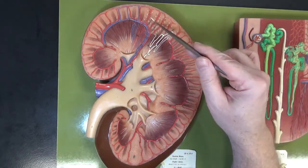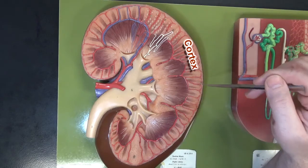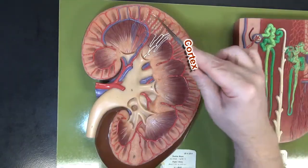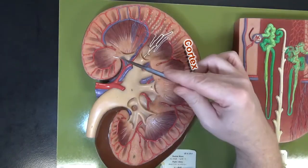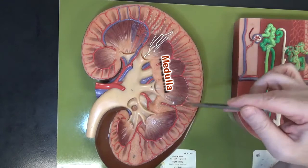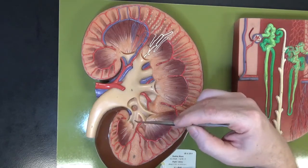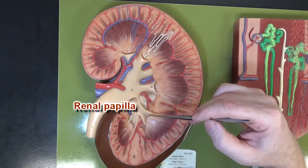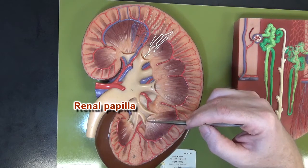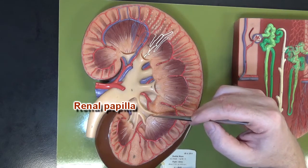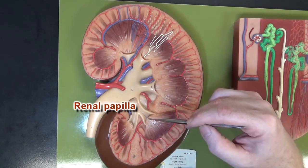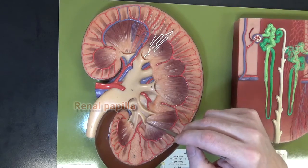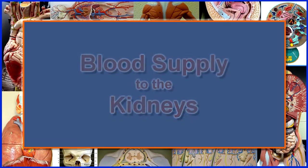The cortical region, or cortex, is on the outside. This is the cortex, and this is the medulla. This pointy part of the pyramid right here is the renal papilla. Papilla refers to a pointy finger-like projection, and that's what these look like.